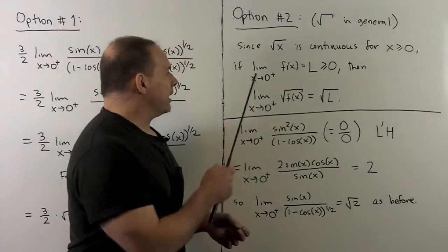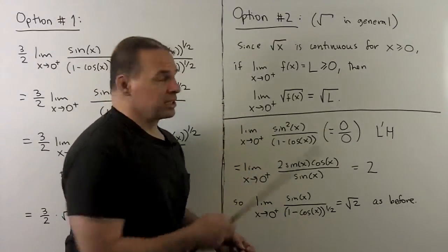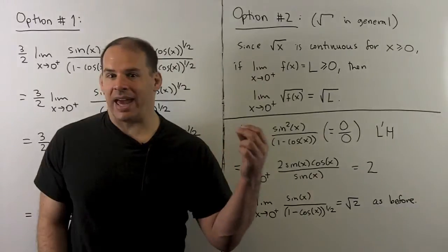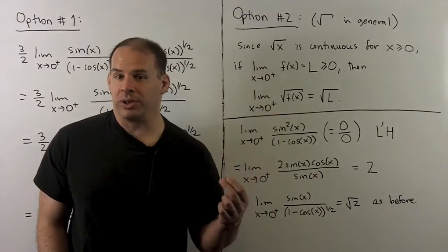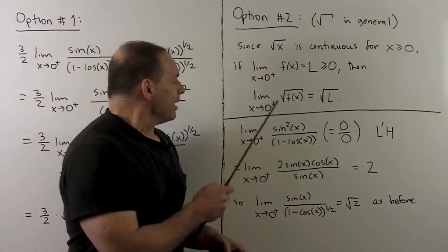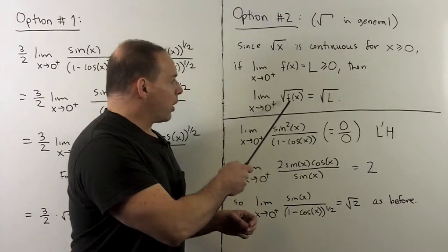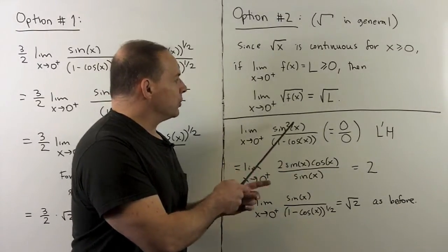That means if we have the limit as x goes to zero from the right of f of x existing and equal to L, a number that's greater than or equal to zero, then we can take the limit of the square root of f, and that's going to go to the square root of L.